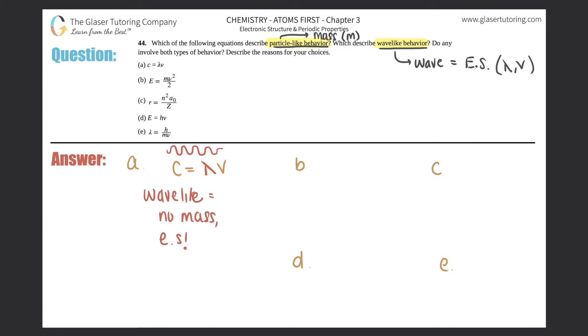B is E equals mv squared over 2. So energy equals mass times volume. In this case, this is, sorry, not volume. This is velocity. So it's mass times velocity squared divided by 2.